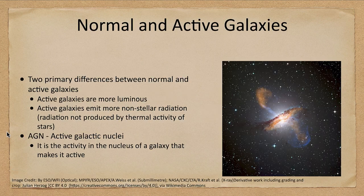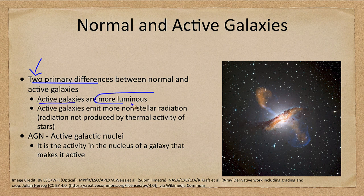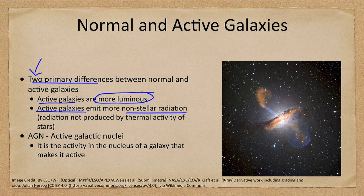So what is the difference between a normal galaxy and an active galaxy? There are two primary differences. One is that active galaxies are more luminous, and the second is that active galaxies emit non-stellar radiation — radiation that is not produced by stars. Stars produce thermal or stellar radiation based on their temperatures, giving off most light in the visible and some in the infrared and ultraviolet portions of the spectrum. However, active galaxies also give off a lot of x-rays and radio waves, which are typically not produced in great quantities by stars.